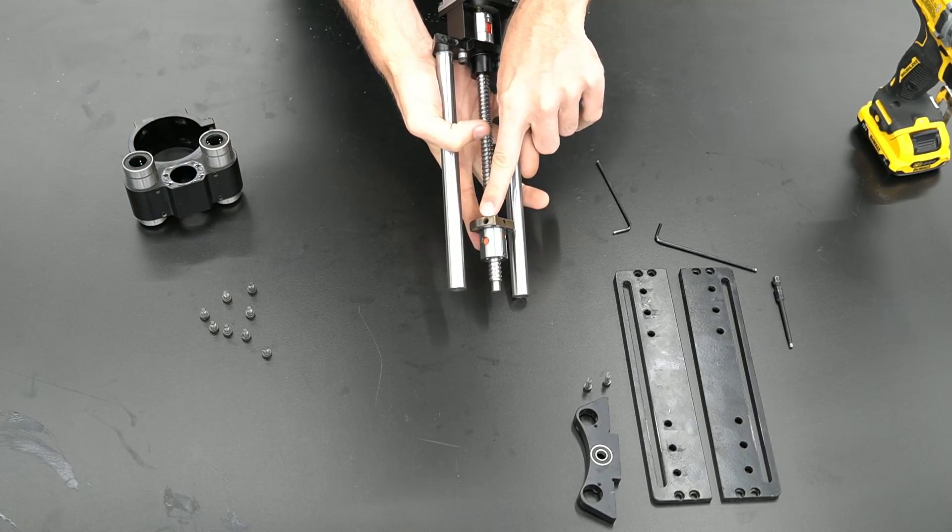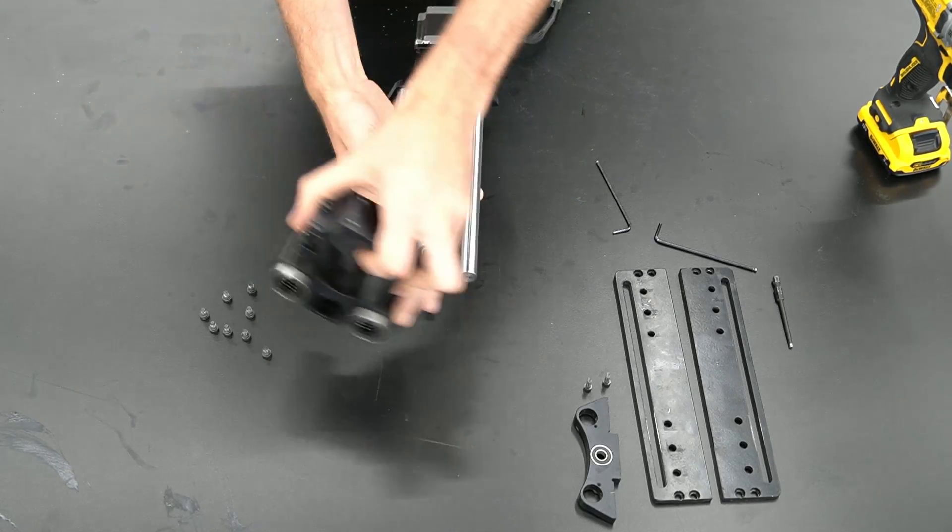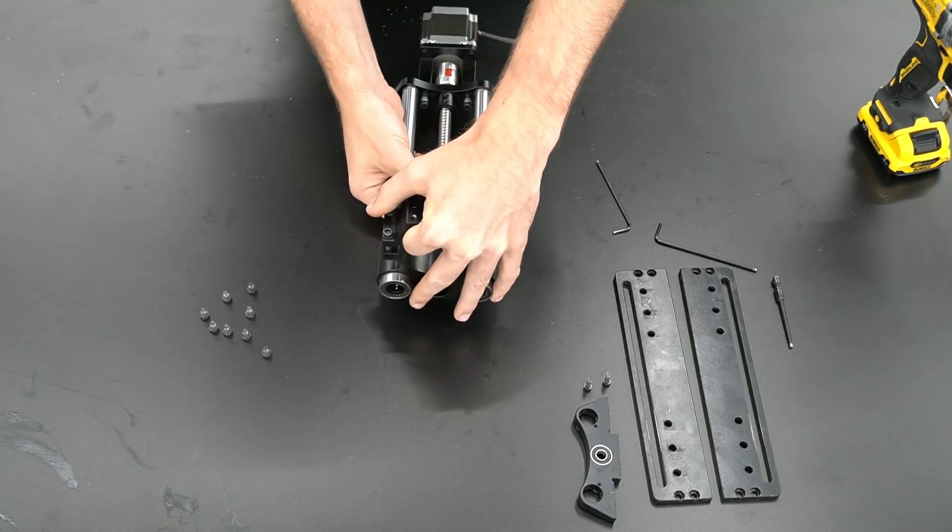Now it's time to reinstall our spindle mount. We want to make sure the hole for the oil port is towards the back of the spindle mount and Z slider.